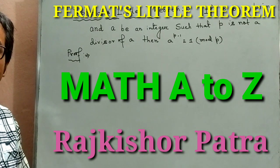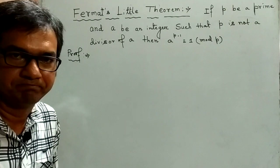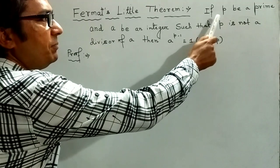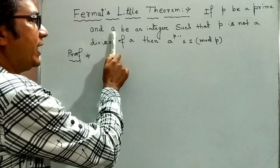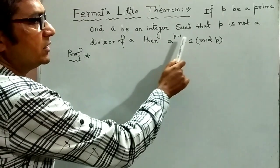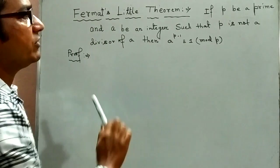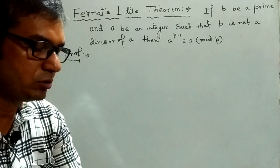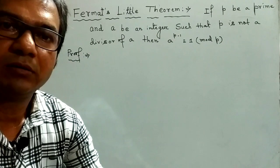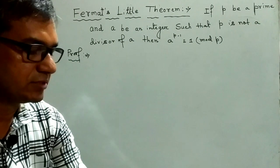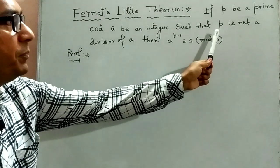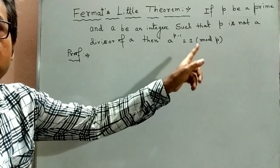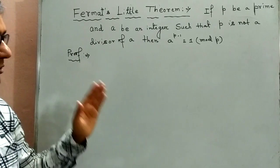So we go to the statement of the theorem. Fermat's little theorem states that if p be a prime and a be an integer such that p is not a divisor of a, then a to the power p minus 1 congruence to 1 mod p. Here p must be prime and a be any integer. p is not a divisor of a. Then Fermat's theorem states that a to the power p minus 1 congruence to 1 mod p.